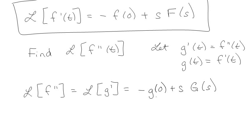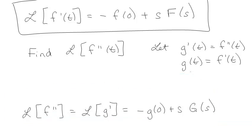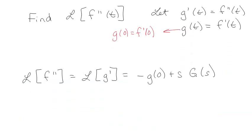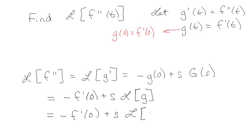So since I know that g at t is f prime at t, then that means that g at 0 is the same thing as f prime at 0. So I've got that minus f prime at 0 plus s G(s), which is basically the Laplace of g, which means it's plus s times the Laplace of f prime at t.